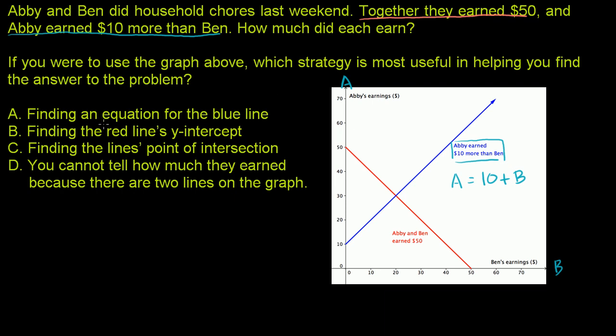Finding the red line's y-intercept. The red line is using the information that Abby and Ben earned $50 combined. The equation of that would be A + B = $50. If you were to just find the y-intercept there, it's just at $50. That's really not giving you any information in figuring out how much they each earned, so option B by itself won't work.